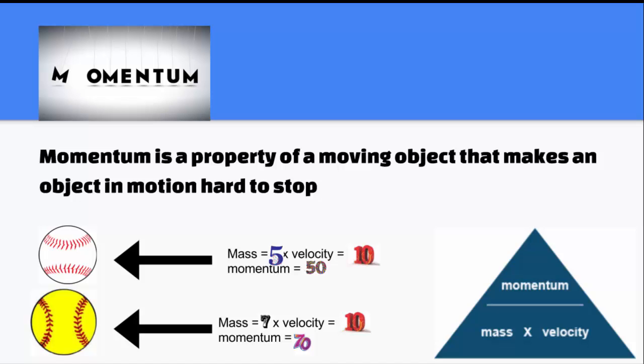Question time. Would you rather get hit with a baseball going 14 miles per hour, or a softball going 10? They both have a momentum of 70, so it really doesn't matter which one you get hit with.